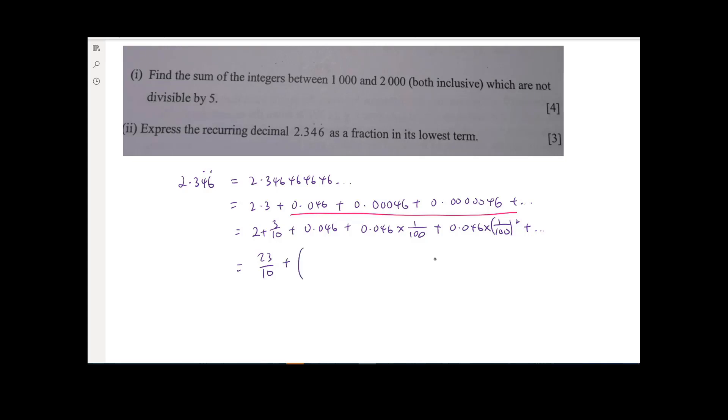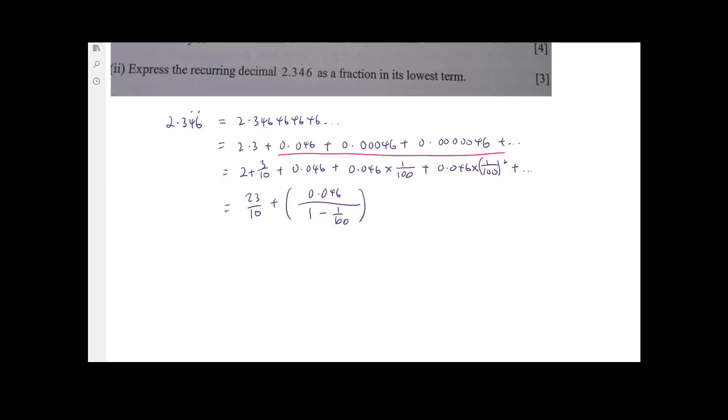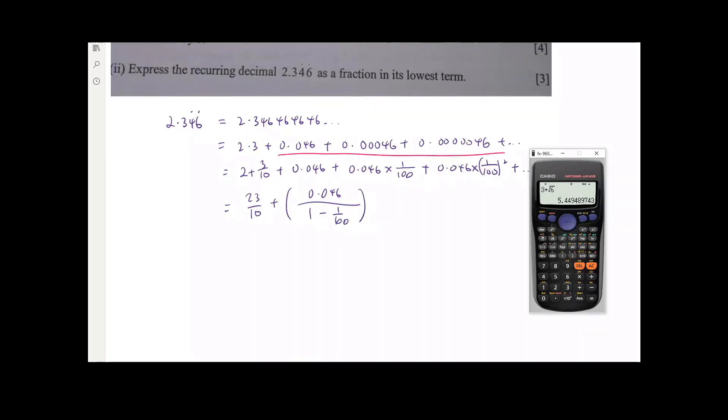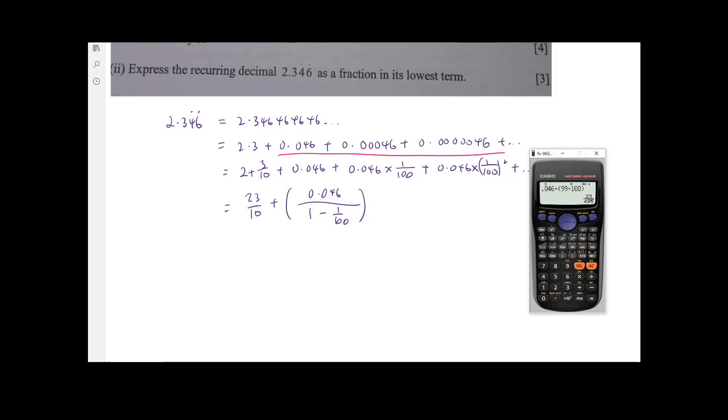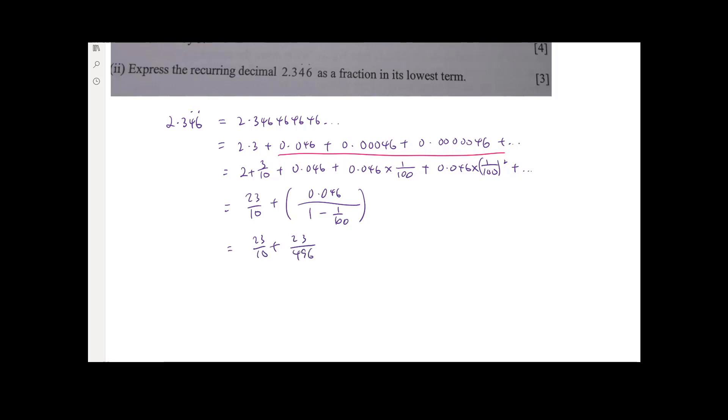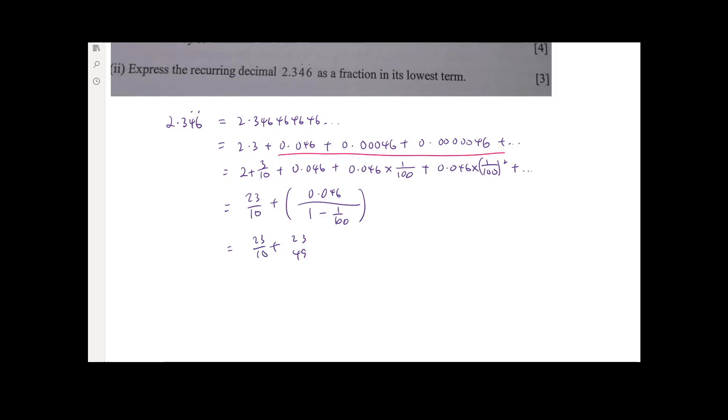But over here, this is what we call the sum to infinity of a GP. Which, for the first term, the first term will be 0.046 over 1 minus r. Correct? The formula goes a over 1 minus r. And guess what? From here on, it's actually very easy. See, this is 0.046, right? And then divide by 99 upon 100. Not bad, this kind of result.